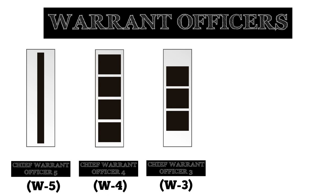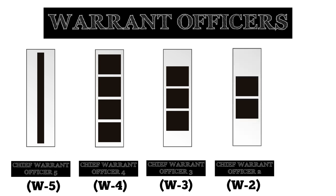Chief Warrant Officer Three are advanced level experts who perform the duties of a technical and tactical leader. The responsibilities of a Chief Warrant Officer Three are to provide guidance, assistance, and supervision required for subordinates to perform their duties. They also support operations from team to brigade levels and can be identified by a rank insignia consisting of a silver bar with three black stripes.